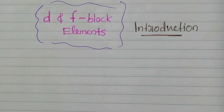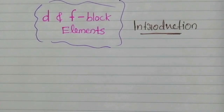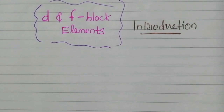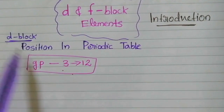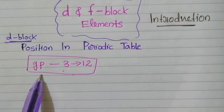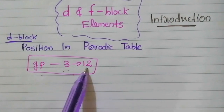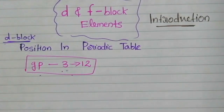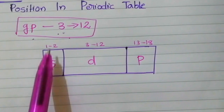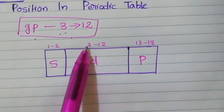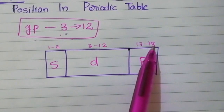In this chapter first we discuss D block elements and after completing that we move to F block elements. First, let's see the position of D block elements in the periodic table — it is from group 3 to 12. D block elements exist in the periodic table from group number 3 to 12. As an outline: groups 1 to 2 is S block, 3 to 12 is D block, and 13 to 18 is P block.